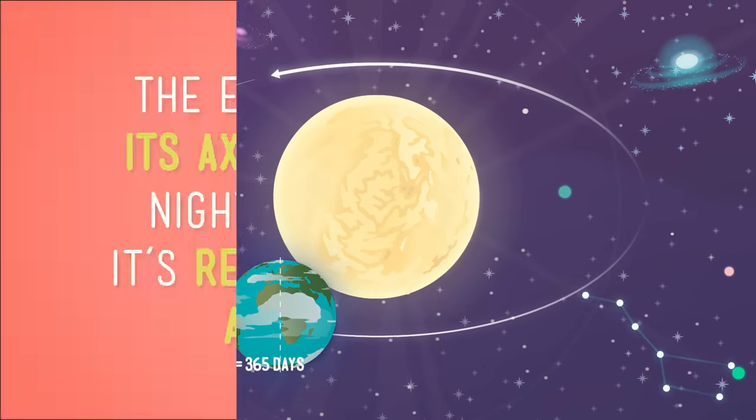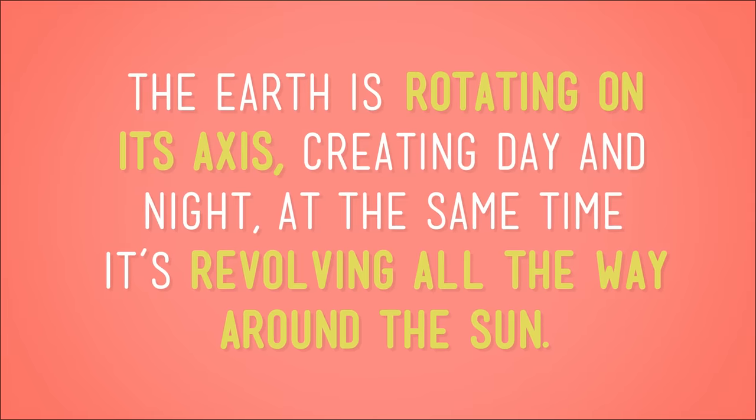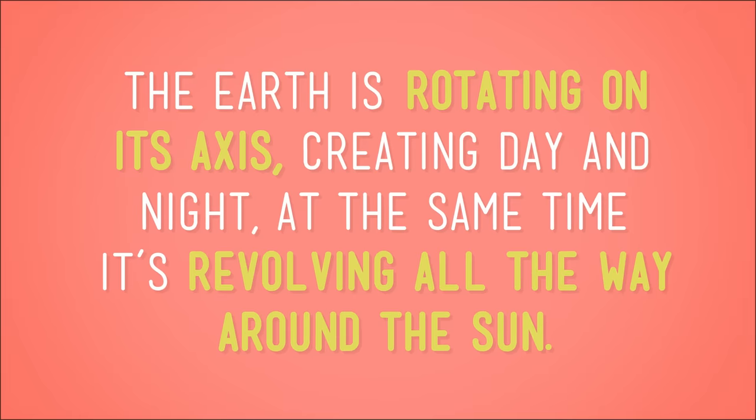So have you got all of this so far? The Earth is rotating on its axis, creating day and night, and at the same time, it's revolving all the way around the sun. Now, here's the thing. As the Earth is both rotating and revolving, it's not sitting straight up and down. Its axis is actually tilted just a little.